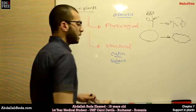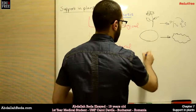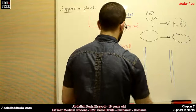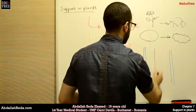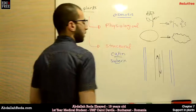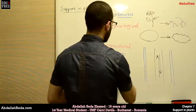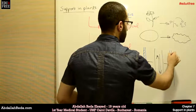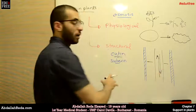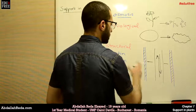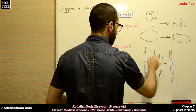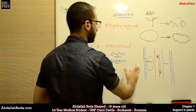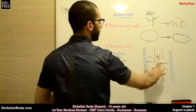Such materials are deposited on the peripheries of the plant. For example, if this is a cross-section of the stem, in the middle we have our vascular bundle that transports water up and down the plant. We will not see such materials in the middle — we will see them on the peripheries. Because the presence of such materials will prevent the action of osmosis, and we need osmosis in the middle. But when water reaches the periphery, we want to prevent water loss as much as possible.